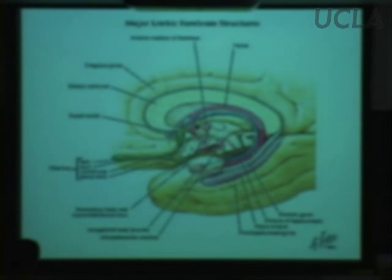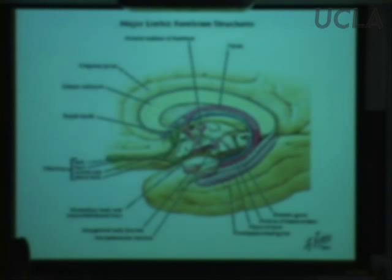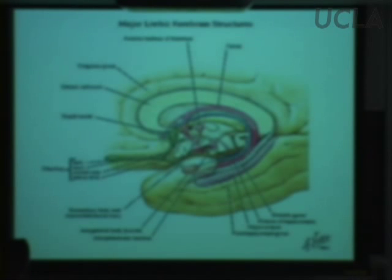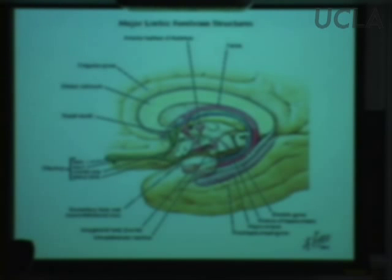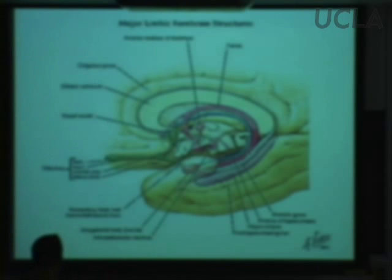Now we're going to segue into the limbic system. The way I'll do that is to note that there are a couple of structures in the limbic system that get direct olfactory input. As you can see in this diagram, the olfactory bulbs project directly to the amygdala, which is part of the limbic system. Another projection of the olfactory bulbs is to the septal nuclei. Both the amygdala and the septal nuclei get projections from the olfactory bulb.